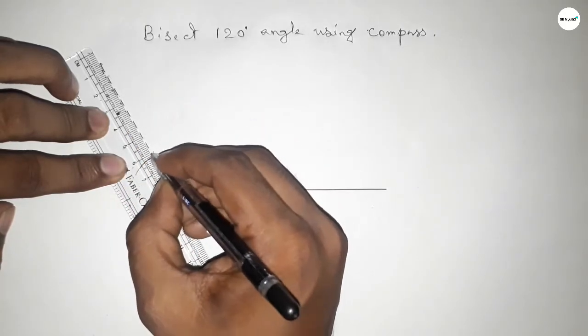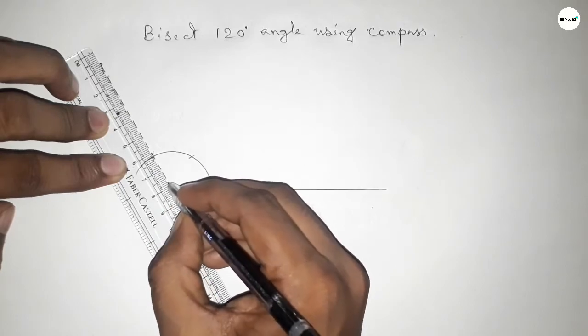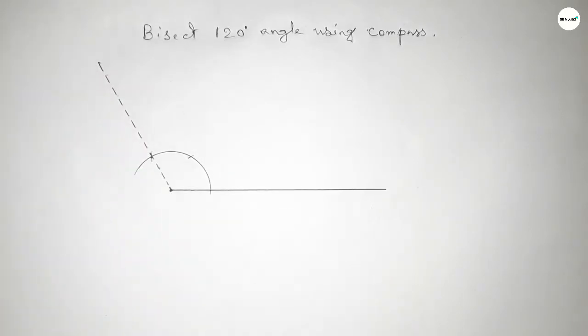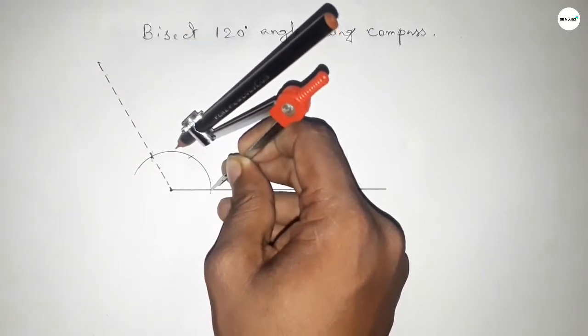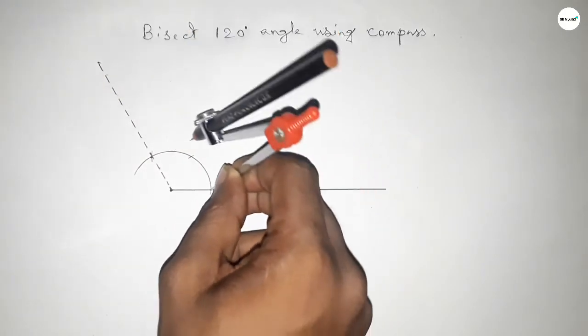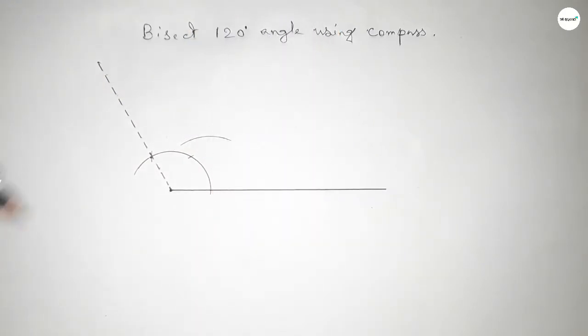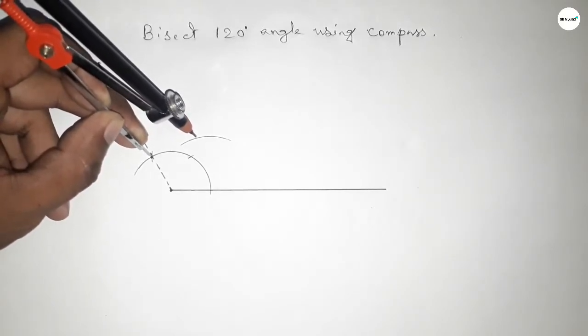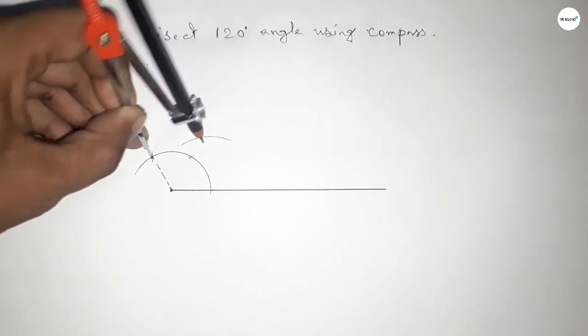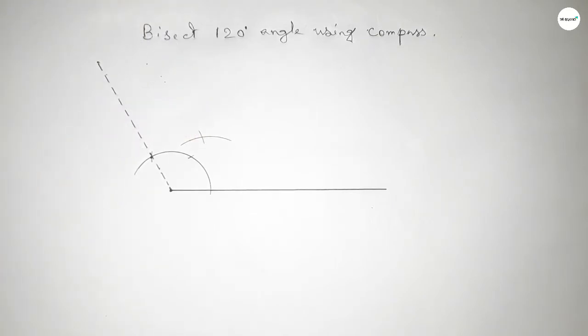We got a 120-degree angle. Now putting the compass here and taking greater than half of this and drawing an arc here. With the same length, putting the compass here and cut here.